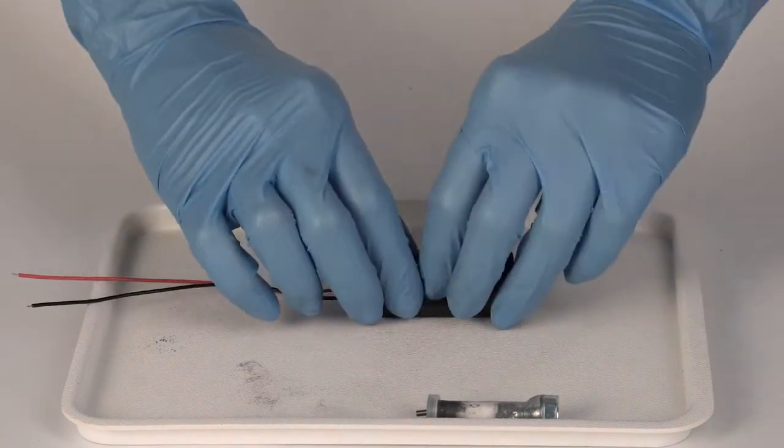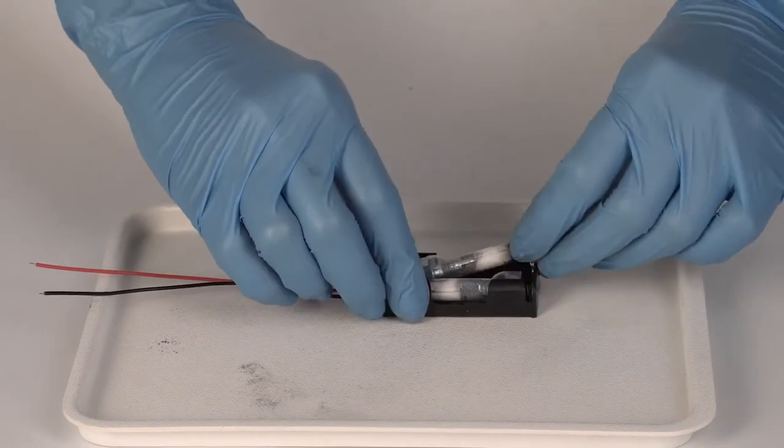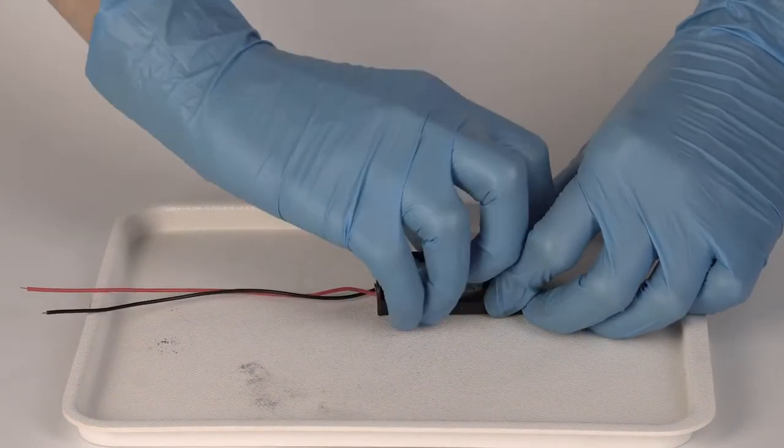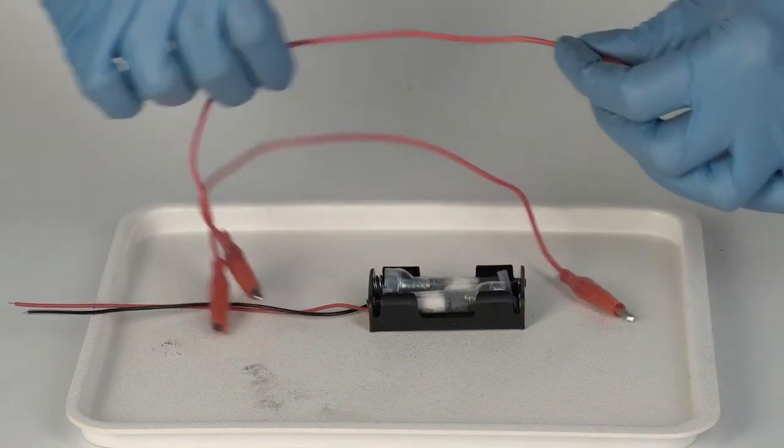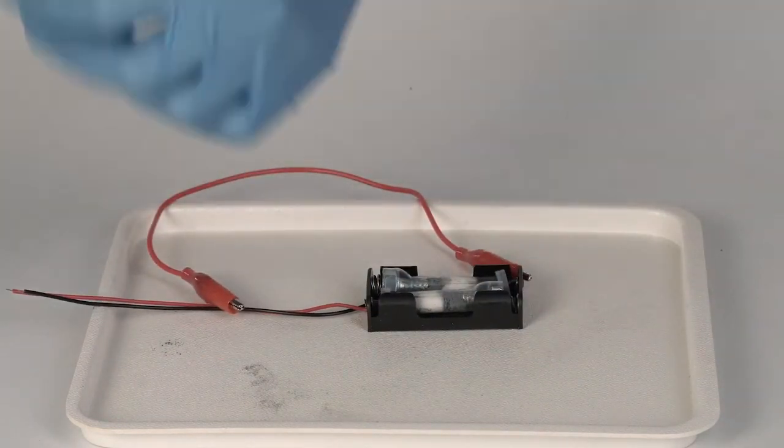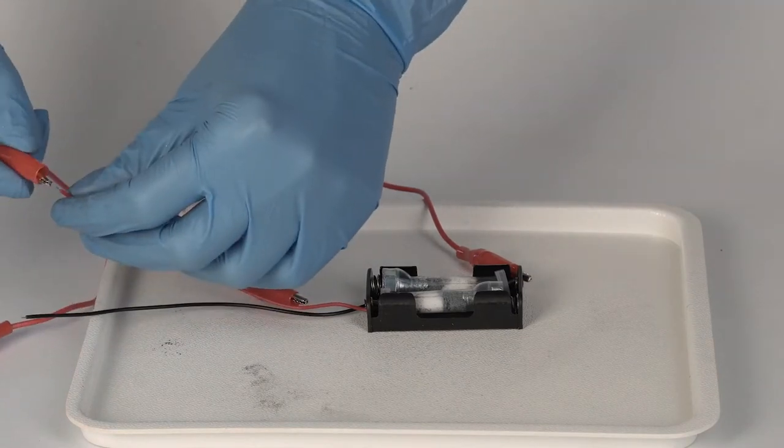Then put both batteries into the battery holder. Just as with regular batteries, it is necessary to note the polarity. The screws in both batteries should be touching the springs in the holder.